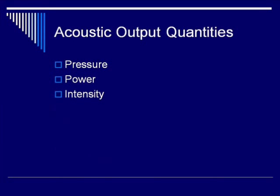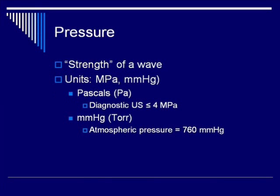So what do we mean by acoustic output quantities? These are ways we can look at how much ultrasound we're putting into the tissues. The three ways we're going to start with are pressure, power, and intensity.